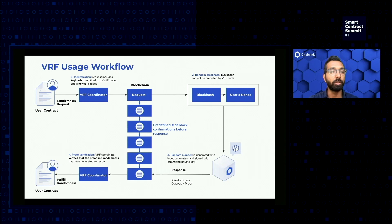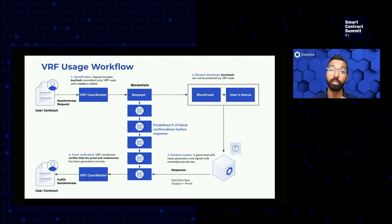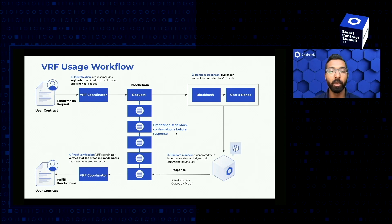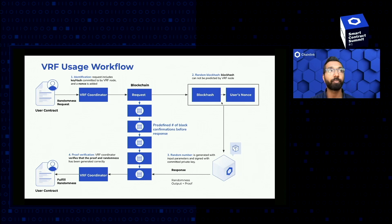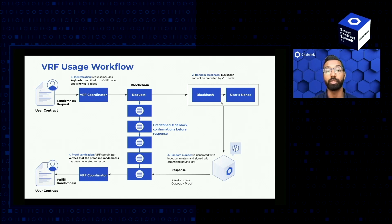Let's dive a little bit deeper into the actual usage workflow. We start with the user contract submitting a request to the VRF coordinator contract. In doing so, we identify the key hash committed by the VRF node, and a nonce is added specific to this request from this requester such that each one is perfectly unique. An event is submitted by the VRF coordinator that the VRF nodes are listening for. What you should recognize here is that we are using the block hash and the user nonce, but we are not relying purely on the block hash. The purpose of this is that every single transaction submitted is unknowable ahead of time — a user cannot know it, an app developer cannot know it, and the VRF node does not know it.